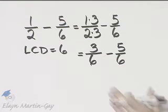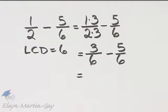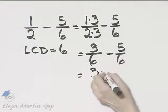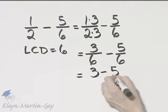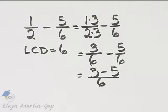Notice I now have the same denominators, and now that I have the same denominators I have the right to place numerator 3 minus numerator 5 all over a common denominator of 6.